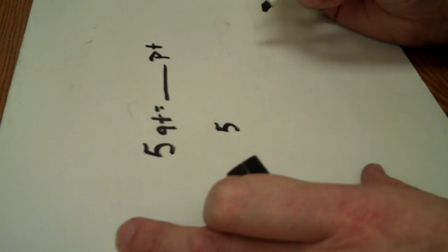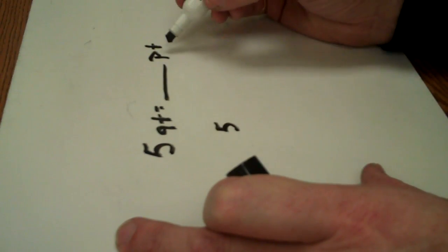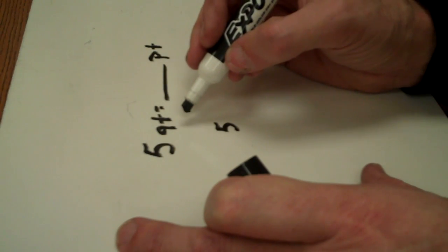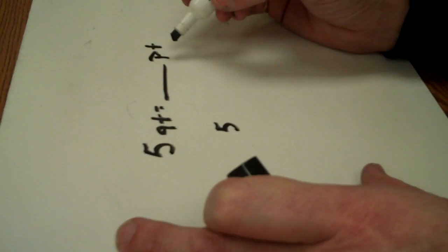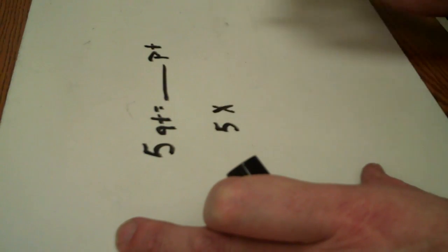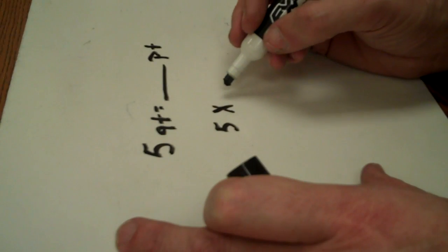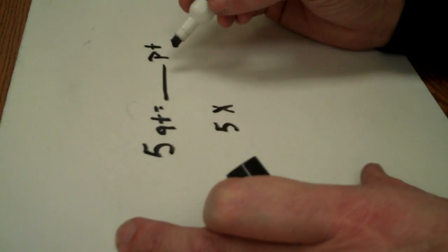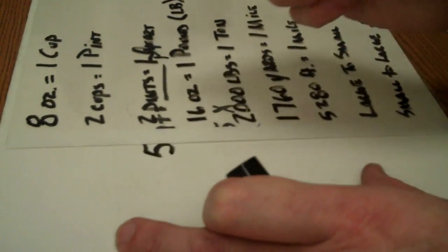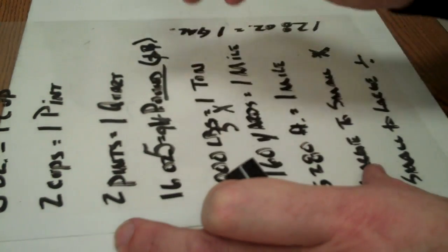Now, quarts to pints, you're going from something that is large to small, and any time you go from large to small, you're going to have to multiply. So I know I'm going to have to multiply. Now, I just need to know the other factor here. So, how many pints are in a quart? Well, that's one of the things that we're going to have to memorize, that two pints equals one quart.